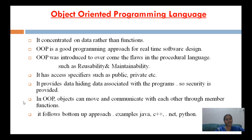Object-oriented programming has access specifiers such as public, private, etc. In procedural programming language, there are no access specifiers, but in object-oriented programming we have access specifiers like public and private. It provides data hiding — data is associated with the program, so security is provided. In object-oriented programming, objects can communicate with each other through member functions.